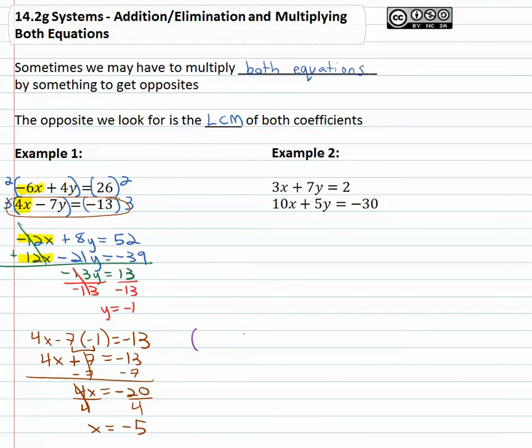Our final solution then as an x, y pair, x is -5 when y is -1. We have our solution.